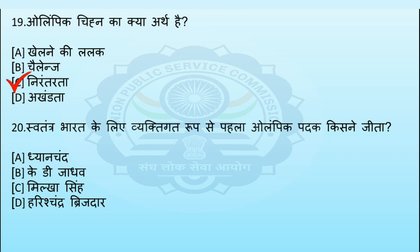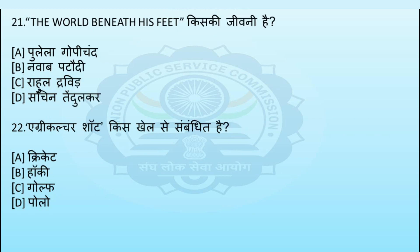अगला प्रश्न: स्वतंत्र भारत के लिए व्यक्तिगत रूप से पहला ओलम्पिक पदक किसने जीता था? Option A: ध्यानचंद, Option B: के. डी. जाधव, Option C: मिल्खा सिंह, Option D: हरीश चंद्र बुच्दा। इस प्रश्न का सही उत्तर Option C – मिल्खा सिंह है।